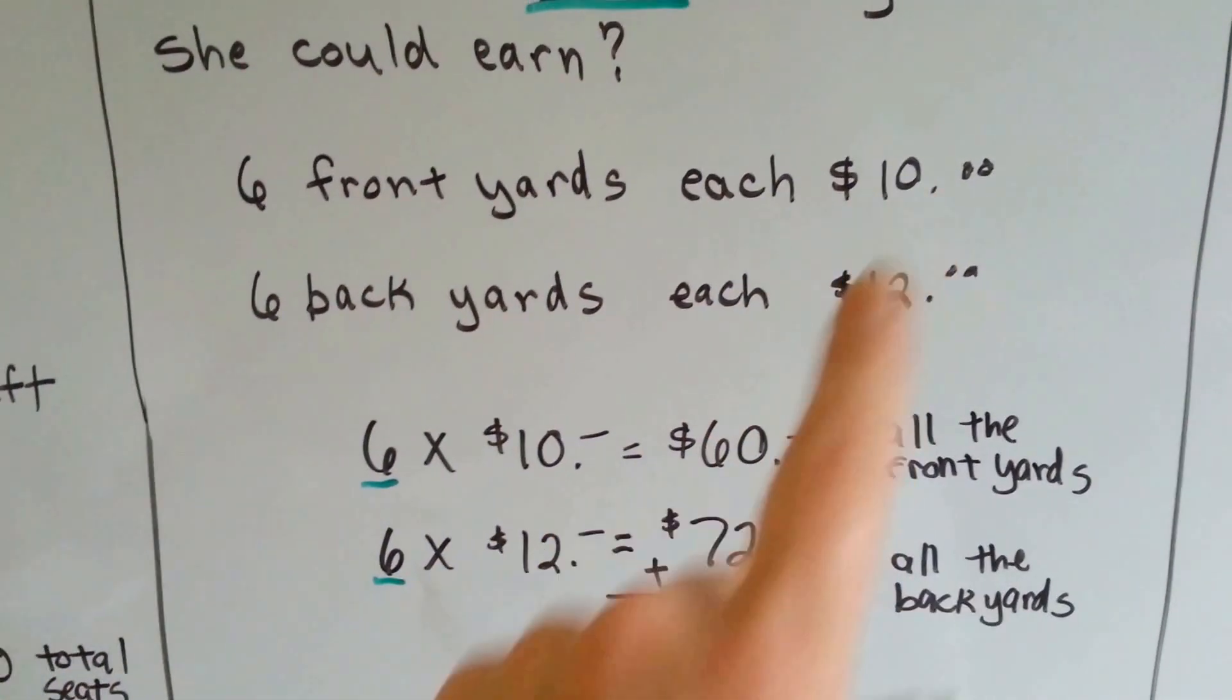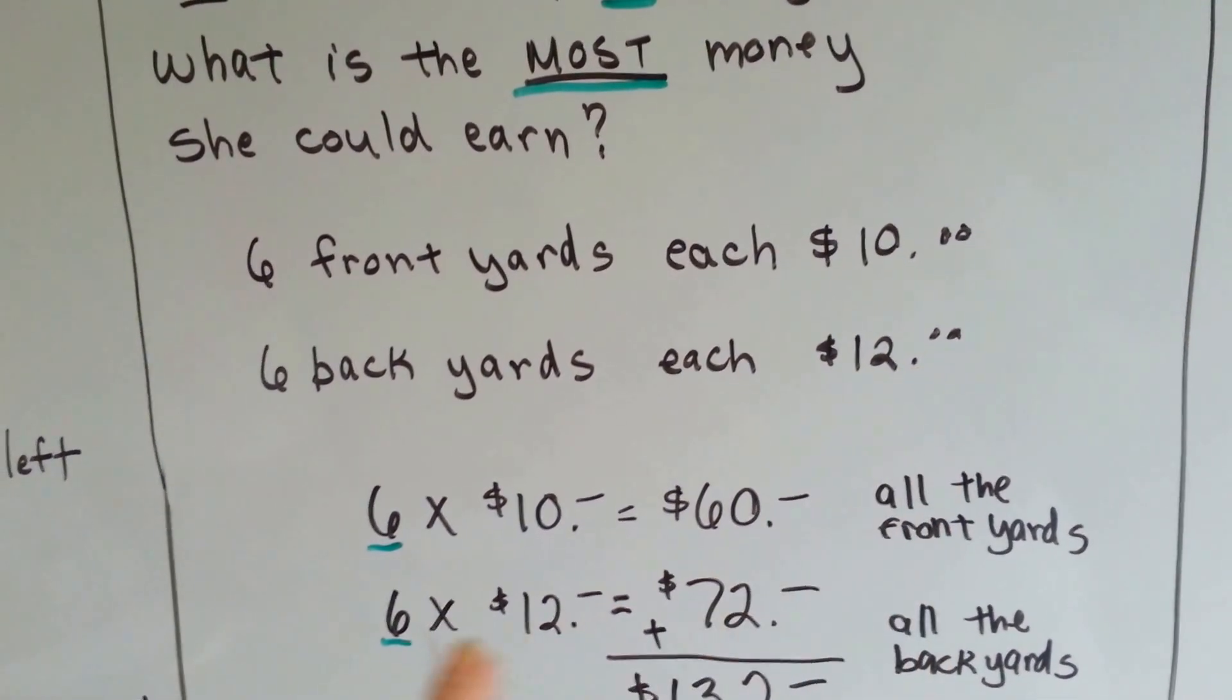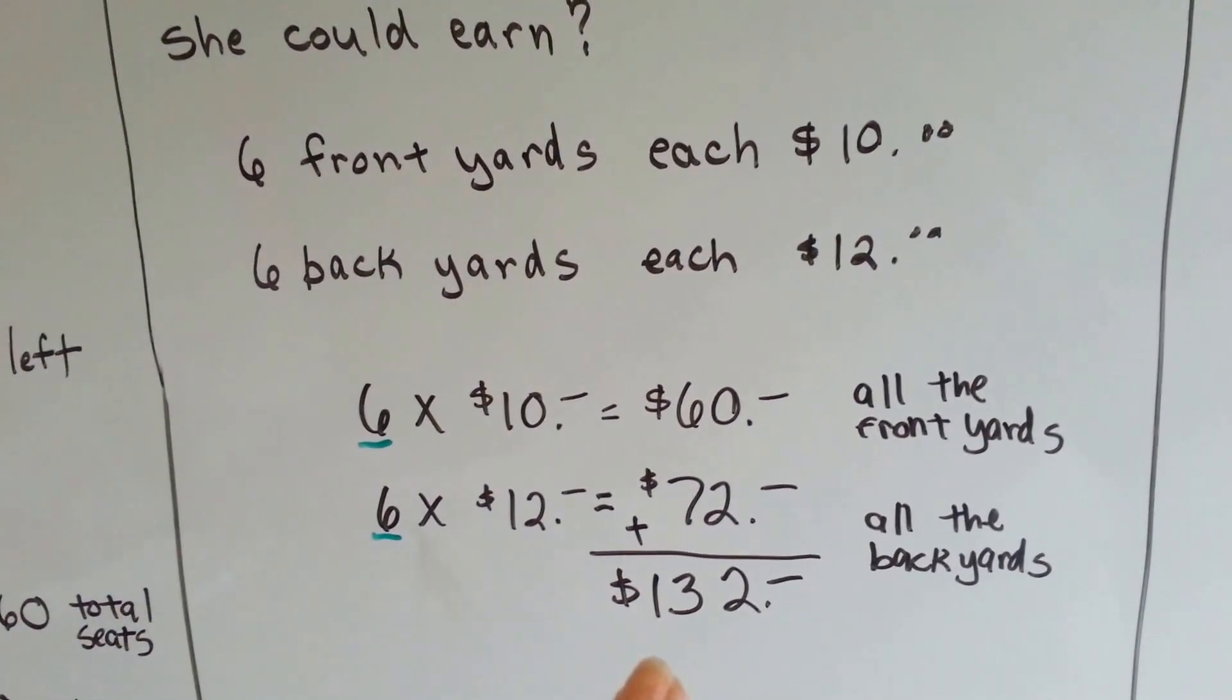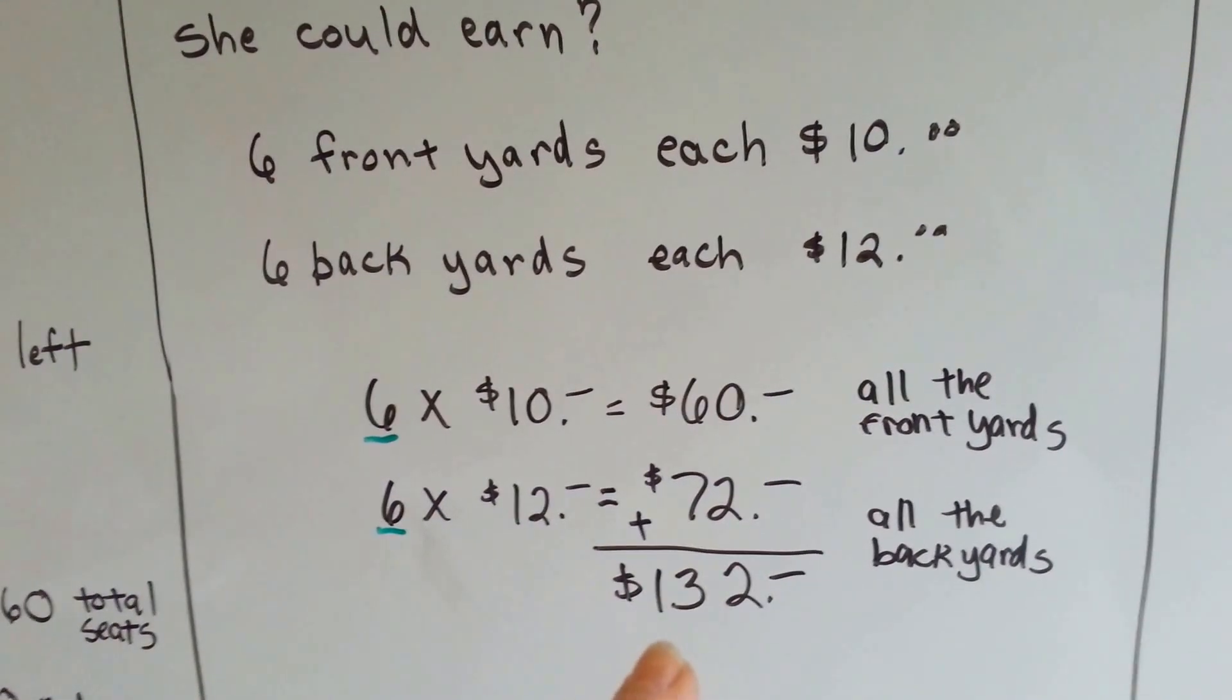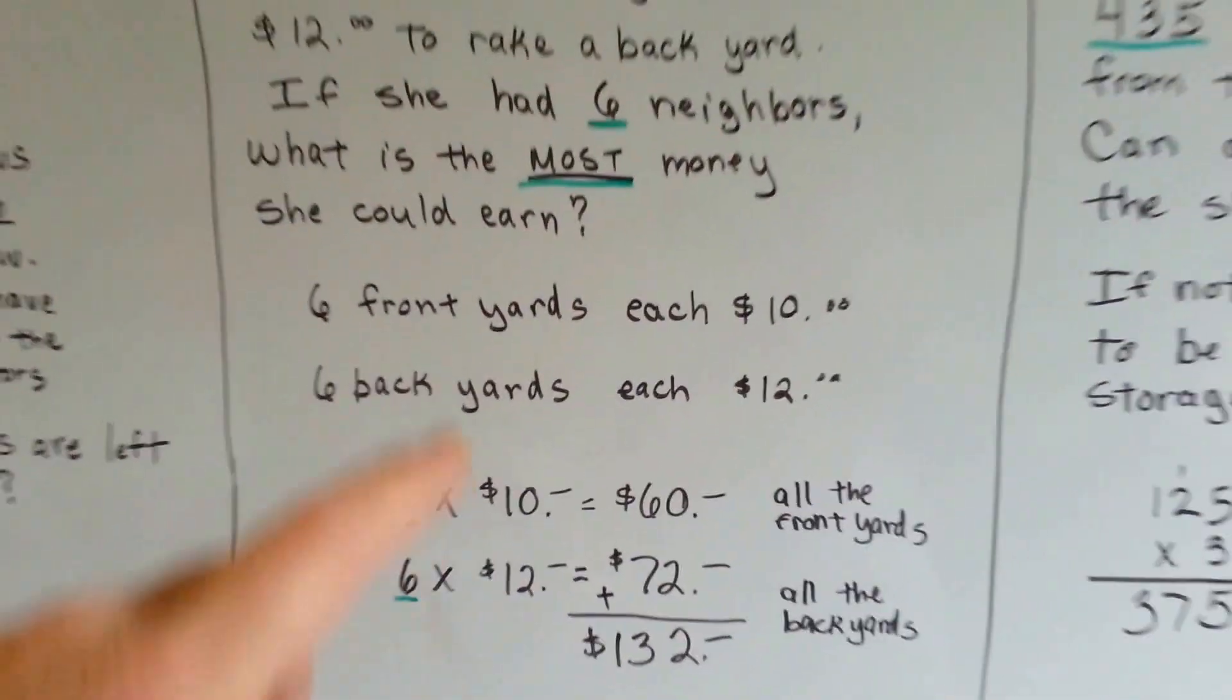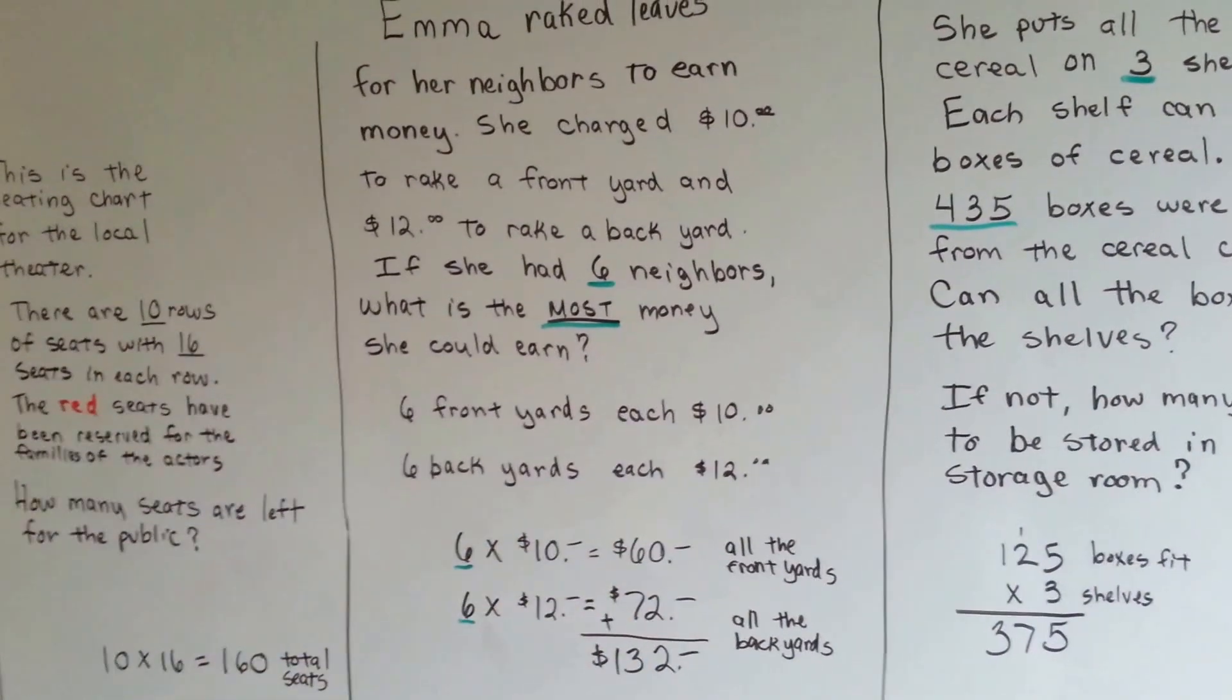So six front yards times ten dollars is sixty dollars. And six back yards for twelve dollars each is seventy-two dollars. We add those two together and if Emma can get her neighbors to hire her to do all the yards, front and back, she could make, at most, a hundred and thirty-two dollars. We multiplied the amount of the fronts and we multiplied the amount of the backs and then we added it together.